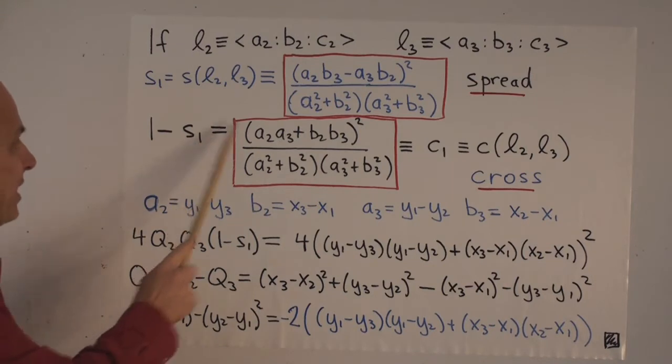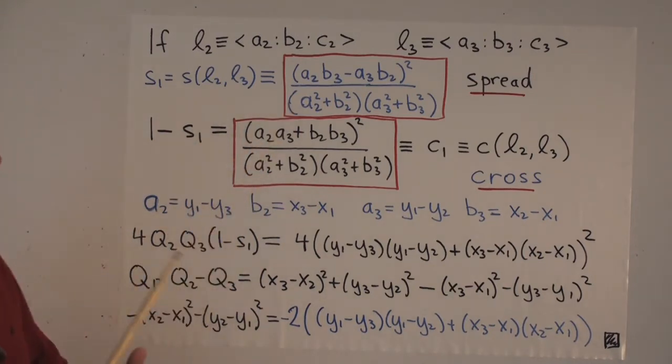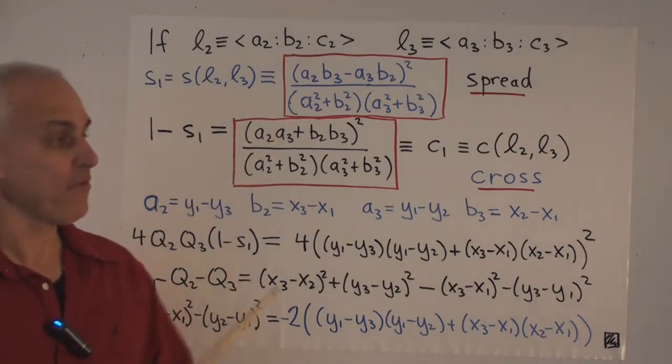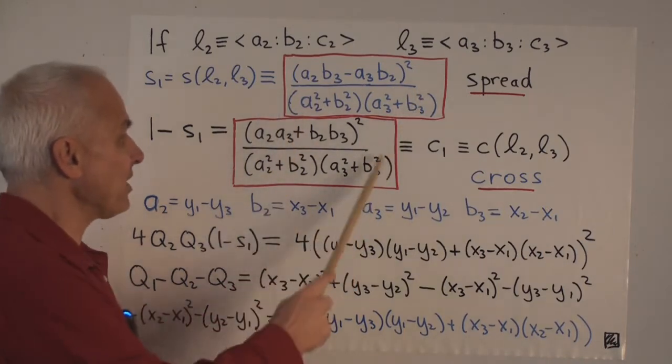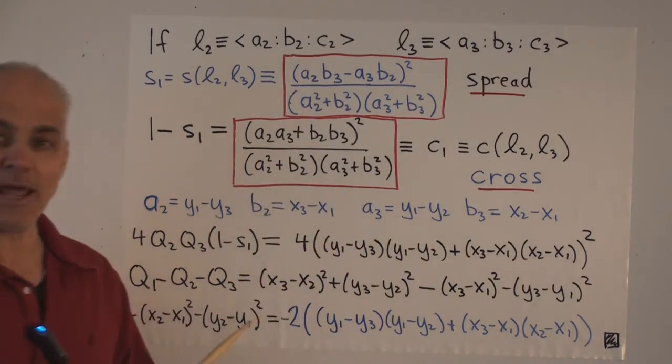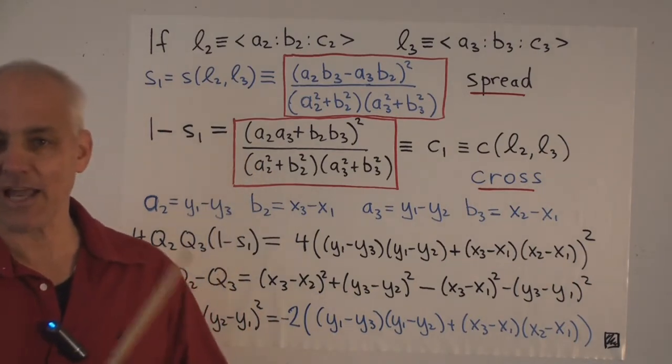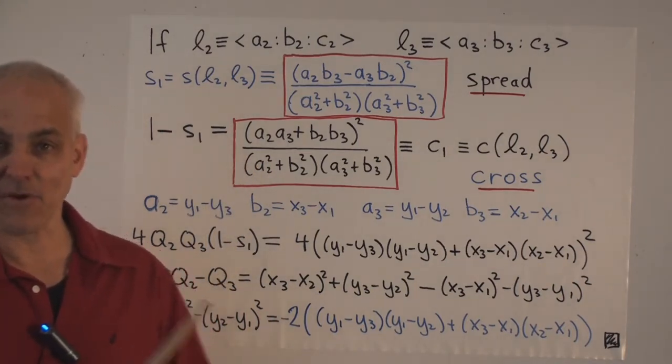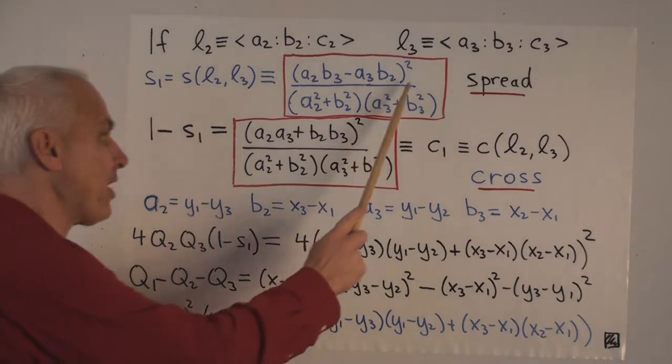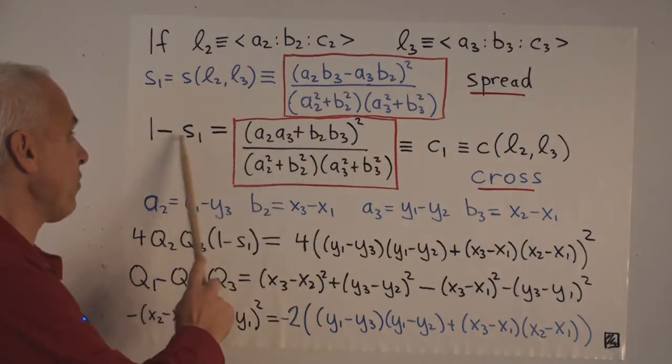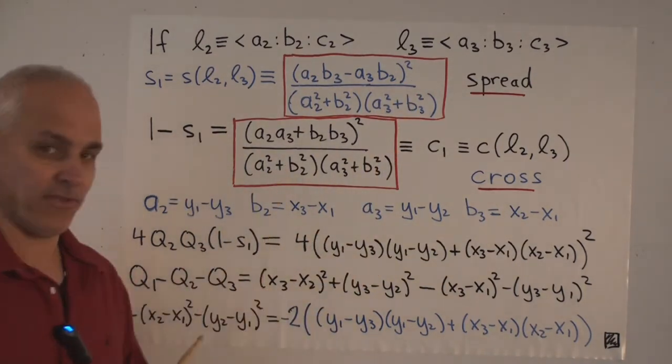Now if we look at 1 minus S1, then it's a remarkable and beautiful fact that that simplifies to an expression that looks a little bit like it. And that's a result of Fibonacci's identity and it's something that we've seen at least a few times. So I hope you all know how to go from this, expressing 1 minus that as this.